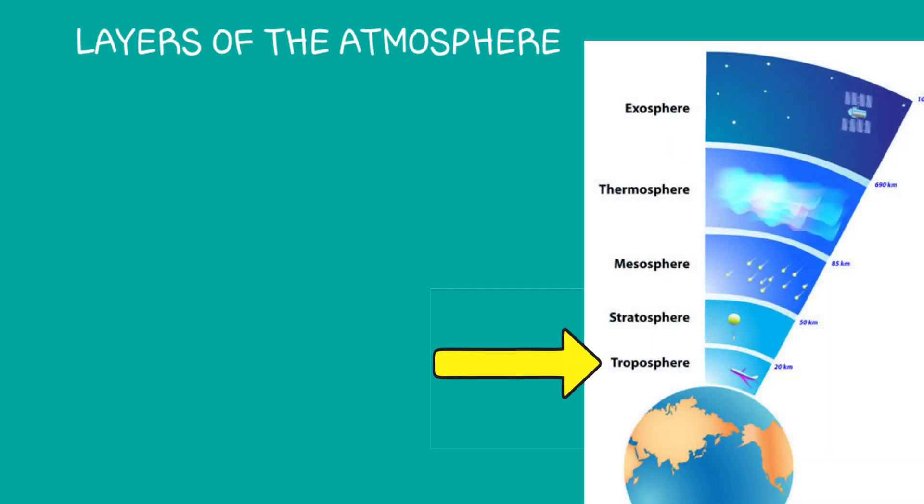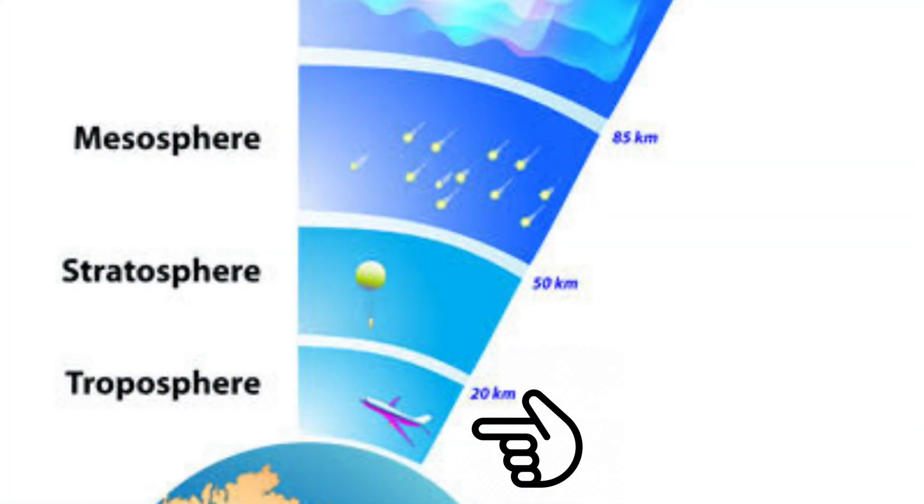The atmosphere has different layers: troposphere, stratosphere, mesosphere, thermosphere, and exosphere. The troposphere extends to about 14.5 kilometers above the Earth's surface. It is the lowest layer where the weather forms.